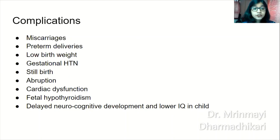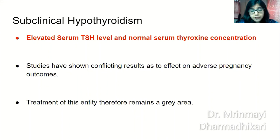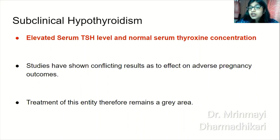Complications of hypothyroidism in pregnancy: miscarriages, preterm deliveries, low birth weight babies, gestational hypertension, stillbirth, abruption, cardiac dysfunction, fetal hypothyroidism, and very importantly delayed neurocognitive development and lower IQ in the child. Subclinical hypothyroidism — elevated serum TSH with normal serum thyroxine concentration — has conflicting results in studies regarding its effect on adverse pregnancy outcomes, so treatment remains a gray area.